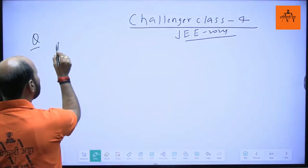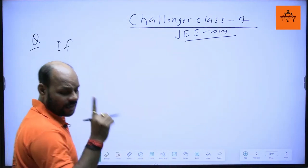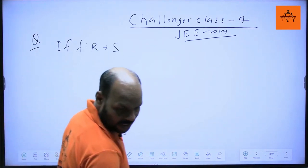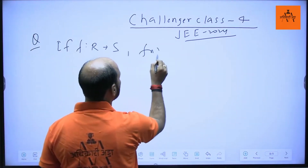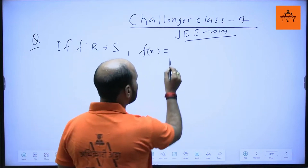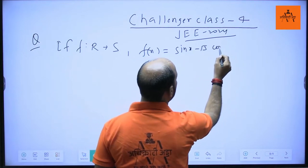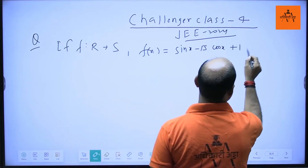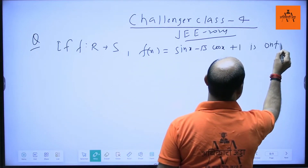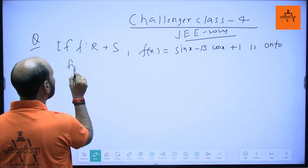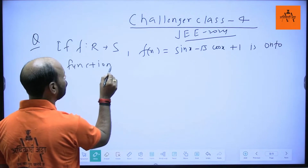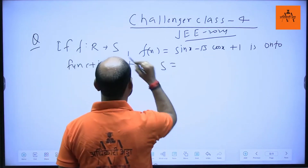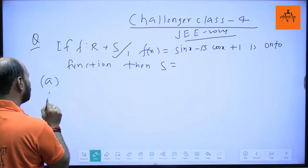If f: ℝ → S, where f(x) = sinx - √3cosx + 1 is an onto function, then what is S? This type of question is always asked.